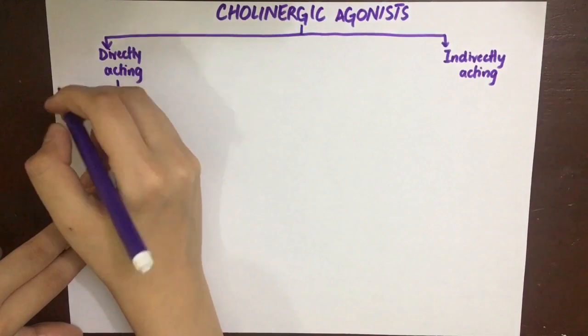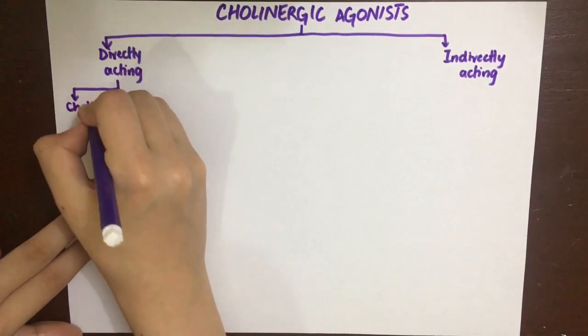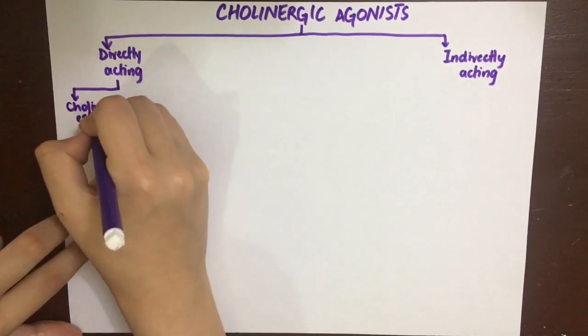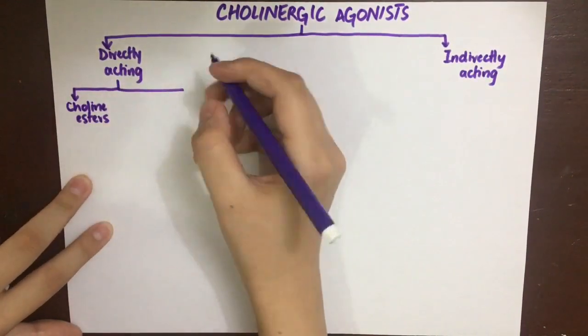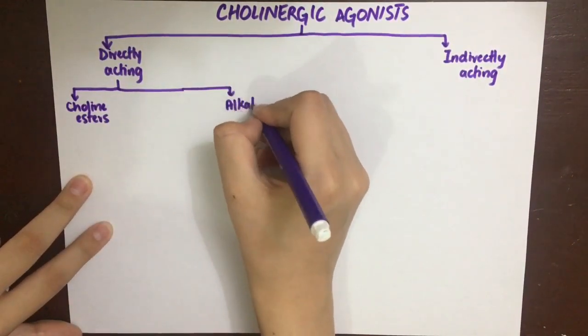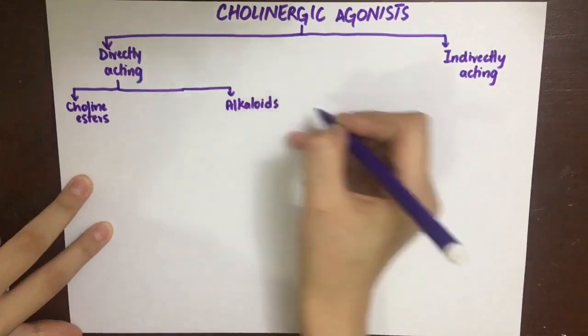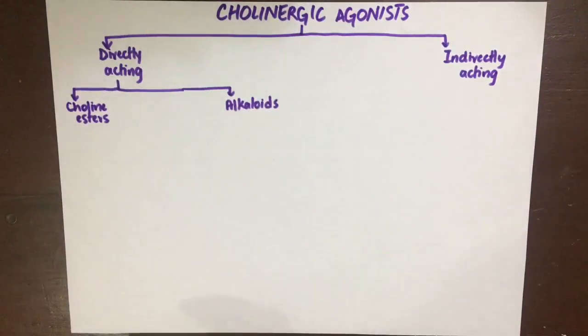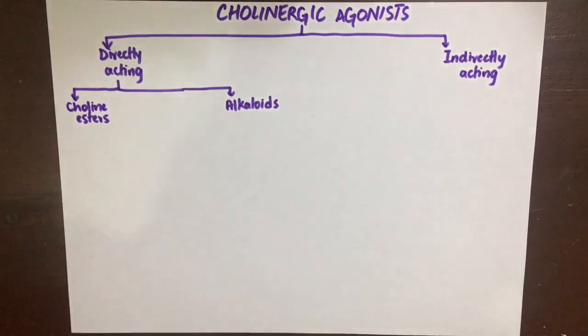The directly acting cholinergic agonists can be divided into the choline esters and the alkaloids. They will act directly by mimicking acetylcholine.